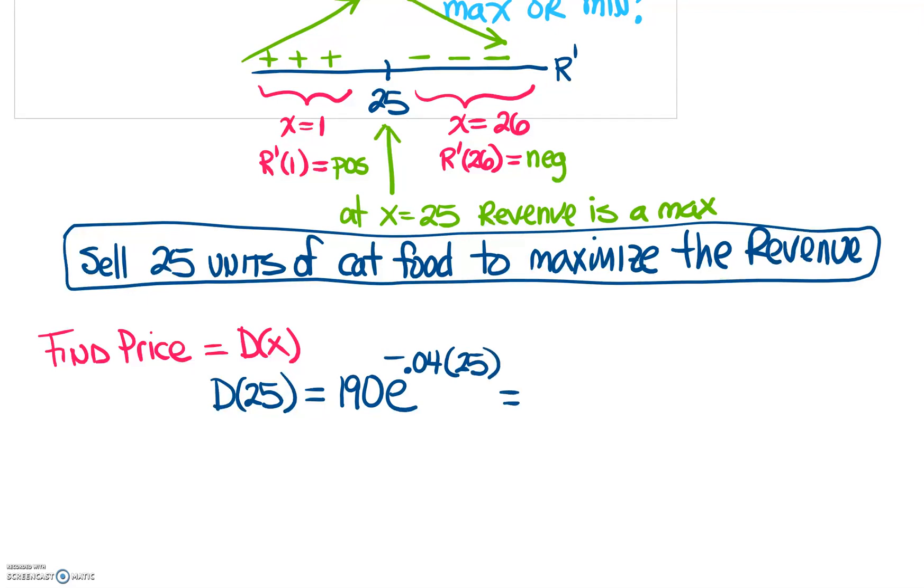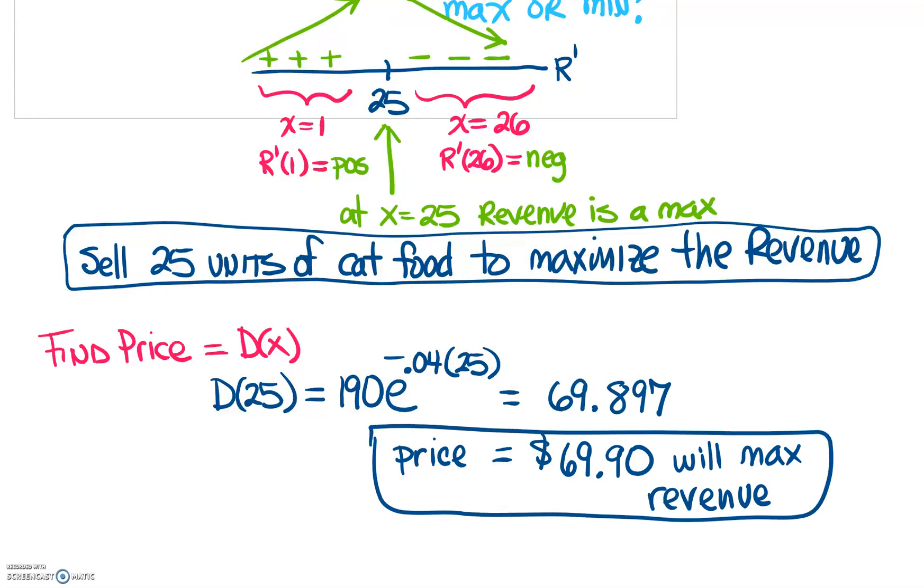So typing this in the calculator and remembering that this is going to be money, we're going to round off to two decimal places. So what we end up getting here is 69.897, etc. And again, since this is money, we're going to say this is $69 and rounding to two decimal places, 90 cents. So this is going to be the price where the revenue is the maximum. So I'm guessing these are probably cases of cat food. So the price of 69.90 will max your revenue. So there we've answered all three questions. And I hope this has been helpful.